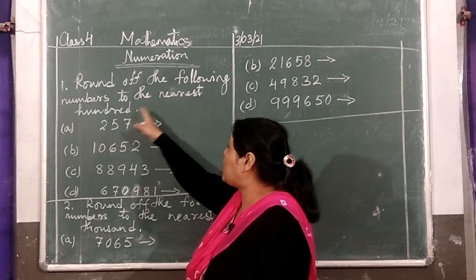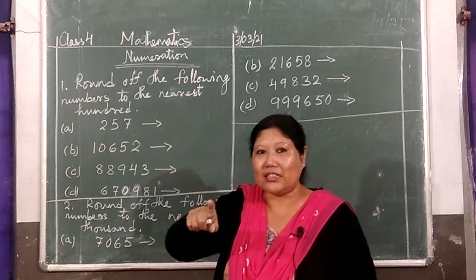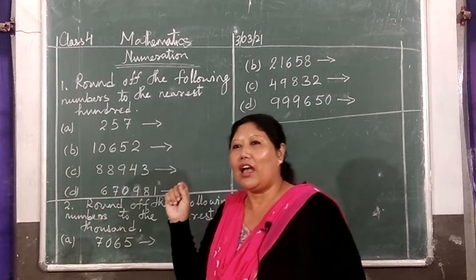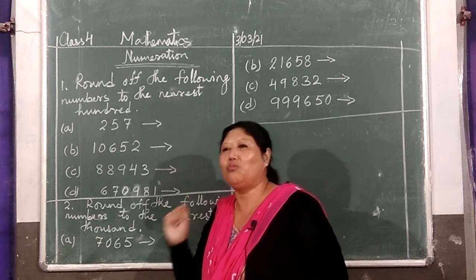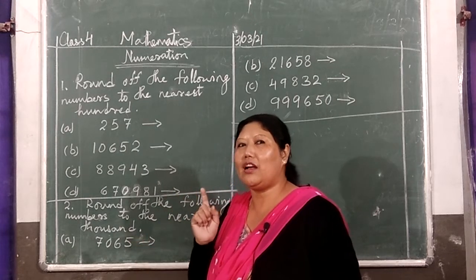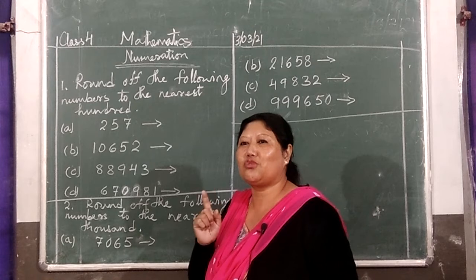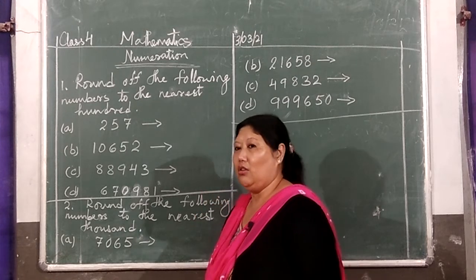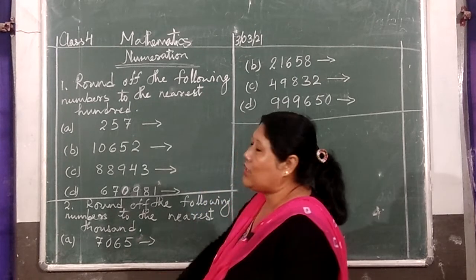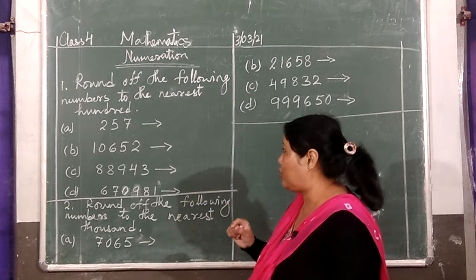Round off the following numbers to the nearest tens. I have given you homework also — I sent homework, and I think only two students submitted the homework. Now this is a continuation of that round off.